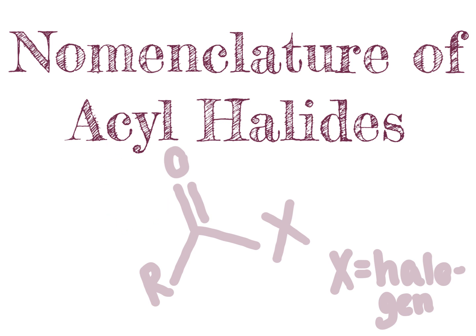By the end of this video, you should be able to look at a molecule that has an acyl halide functional group in combination with other functional groups such as halogens, ether groups, etc., and determine the IUPAC name for that acyl halide. For those of you that recall how to name carboxylic acids from our last unit, naming acyl halides will be very, very similar.